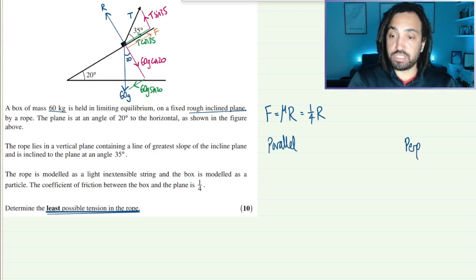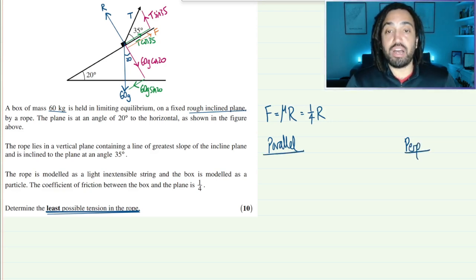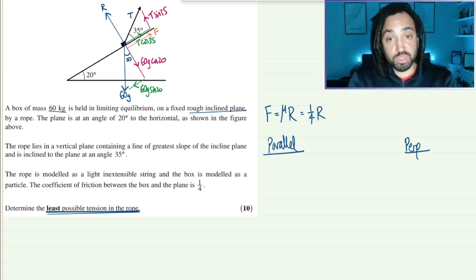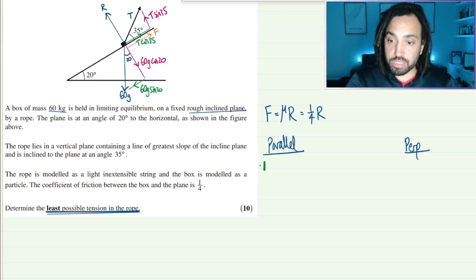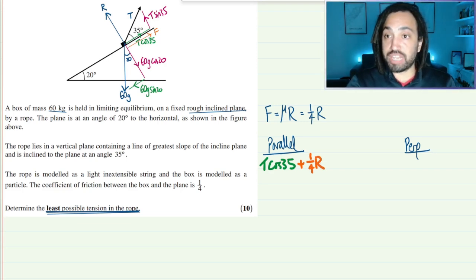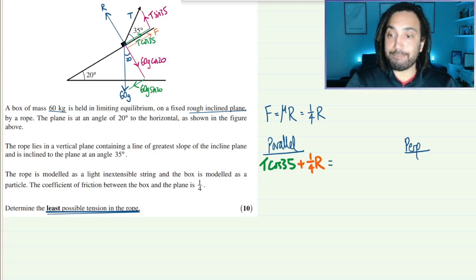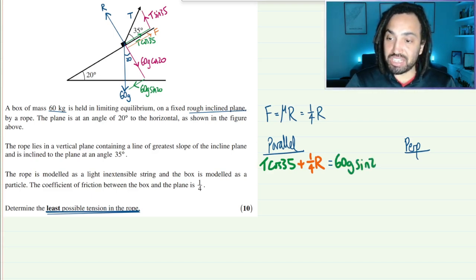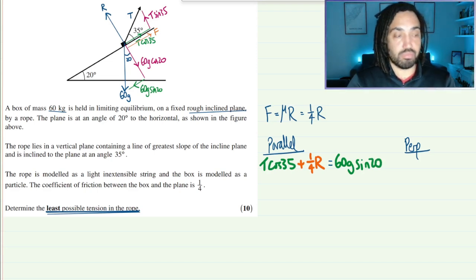So let's look at first parallel to the slope. Now this object is in equilibrium which means the forces are balanced. So the up the slopes should equal the down the slopes. So let's look first at the up the slopes. We've got T cos 35 and we have also friction as well, which is the orange one but I'm just going to call that a quarter R. And that is equal to 60g sine 20.